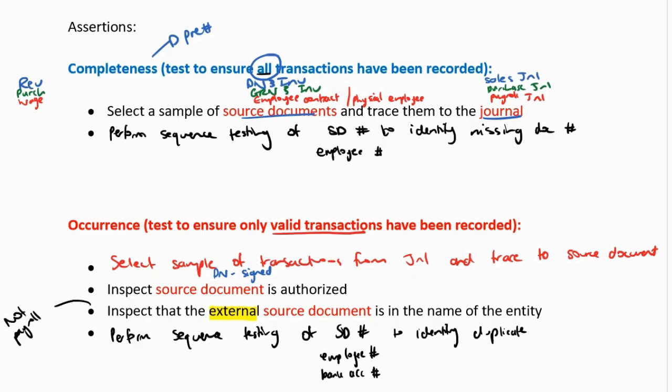Our list of procedures for each assertion — I'm going to look at each and see how I can adapt them to use CAATs. For completeness, you're selecting a sample from source documents and tracing to the journal. If it's hard copy source documents you can't use CAATs because they're outside the system. However, for sequence testing of source document numbers to identify missing, provided there are internal source documents, I can — so I update the procedure to say: using CAATs, perform sequence testing of the source document or employee numbers to identify missing.